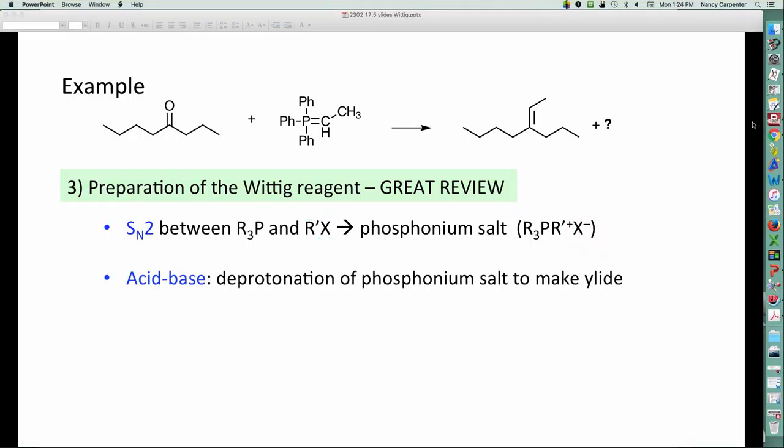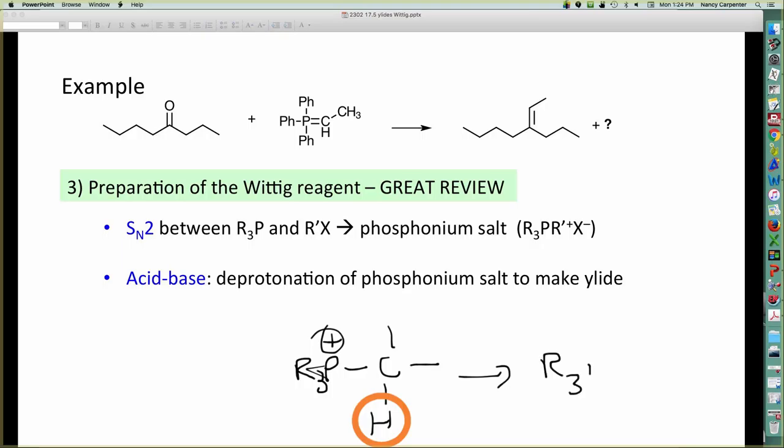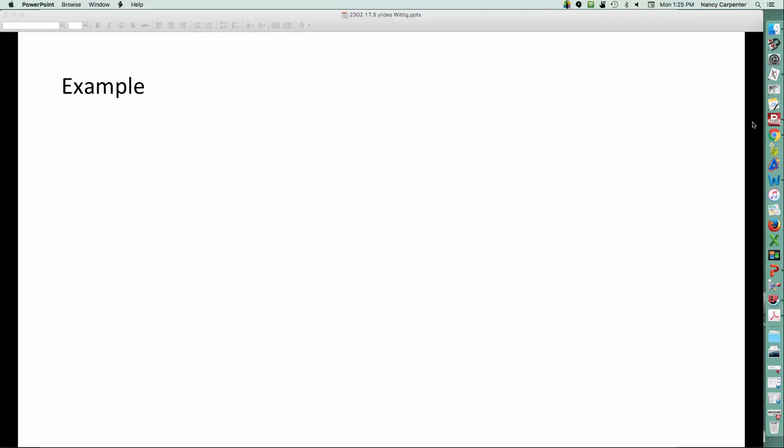Alright, so I first get the phosphonium salt, and then the second step is just acid base. Whatever my phosphonium salt is made up of, I just have to make sure I have a hydrogen here that can be removed. Because as long as that hydrogen is there, it can be removed by a base to give me my ylide. There it is. So, preparation of the Wittig reagent, absolutely the same old stuff we've seen over and over again. One more example.